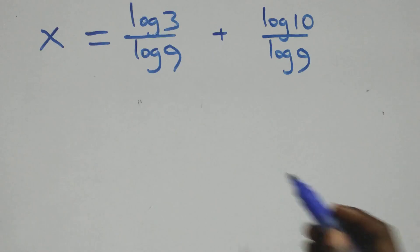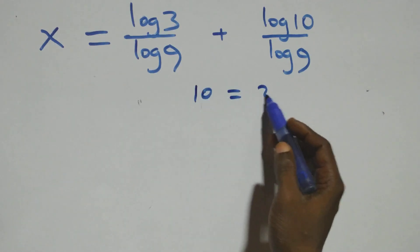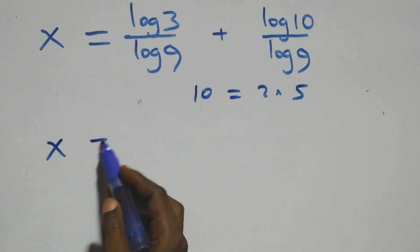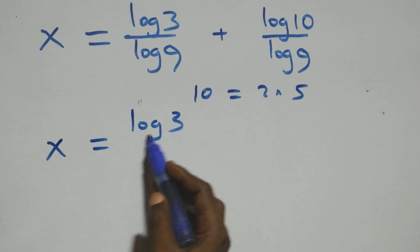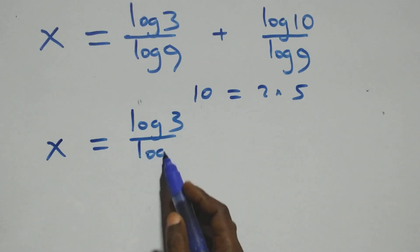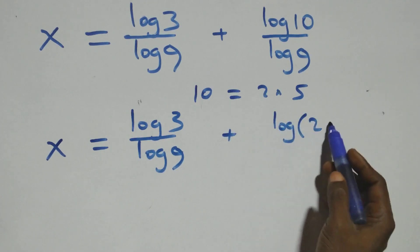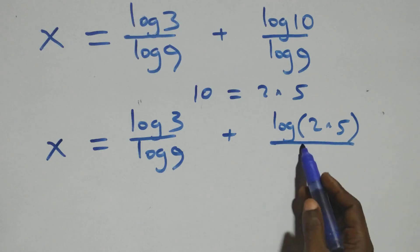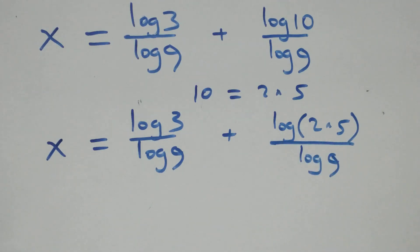Next, we can express 10 as 2 times 5. So what we have becomes x equals log 3 over log 9 plus log(2 times 5) over log 9.